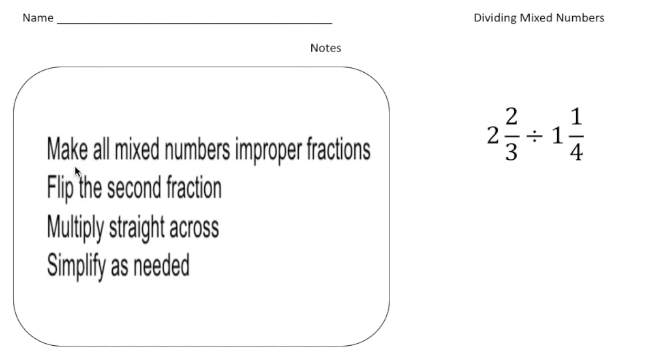So step number one is make all mixed numbers improper fractions. So I'm going to make these into rational form. So in two and two-thirds, we can rewrite that as eight-thirds. And we're going to divide that by, well, one and one-fourth in improper form, whereas improper fraction it's five-fourths.